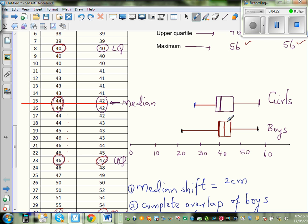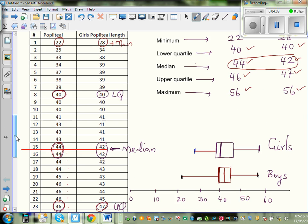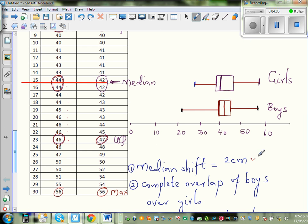So let's talk about the median shift. The median shift is you're looking at the difference between the medians. So the difference between the median is only 2 centimeters.